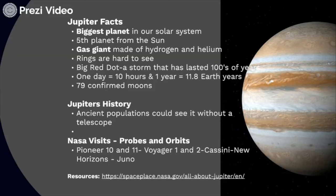One day on Jupiter is only 10 hours, where one day on Earth is 12 hours. And one year on Jupiter — that's one trip around the sun — takes the same amount of time as 11.8 Earth years. So one year on Jupiter takes 11.8 years on Earth. NASA and other space exploration has found 79 confirmed moons on Jupiter. Ancient populations could see it without a telescope, so it has lots of names in different mythologies. Jupiter in Rome was Zeus in Greek times, and the Greek names were switched over to apply to the planets.